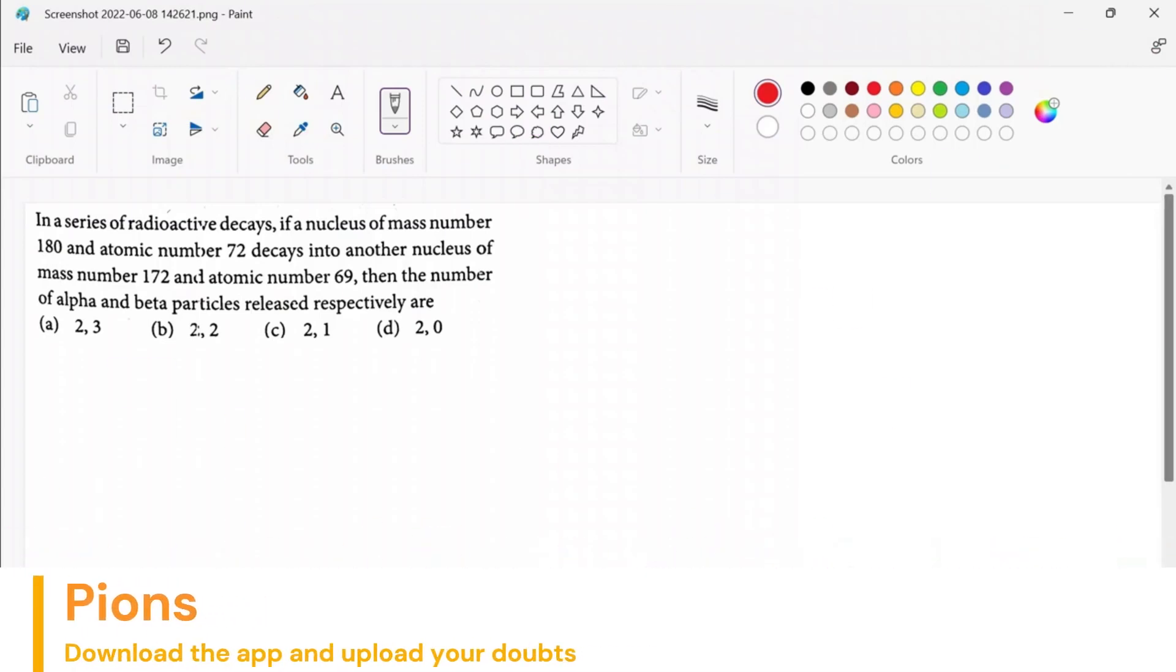A nucleus of mass number 180 and atomic number 72 decays into another nucleus of mass number 172 and atomic number 69. Then the number of alpha and beta particles released will be how many? So all of you are familiar with alpha particles and beta particles.